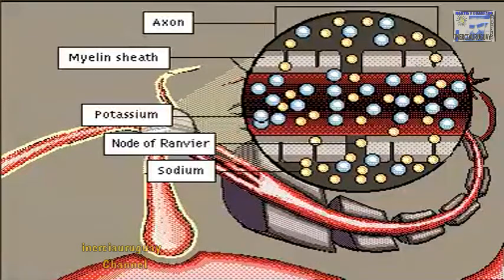When a signal is transmitted, the membrane surrounding the axon is stimulated at the node of Ranvier to permit the different ions to leak through.